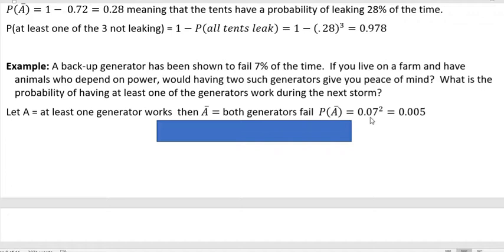And both generators fail would be 0.07 to the second power. 0.07 is our failure rate. And then we have two of those. So that's 0.07 to the second power. And that comes out to be about 0.005. It's actually 0.0049, and we round up to three decimal places.